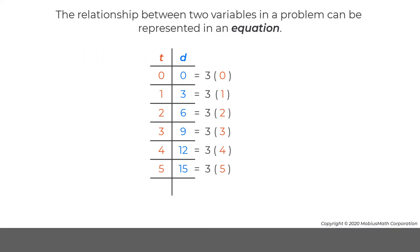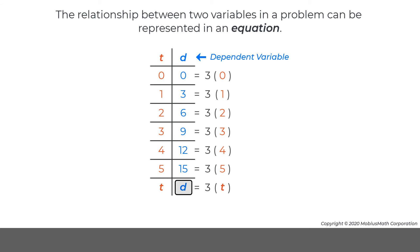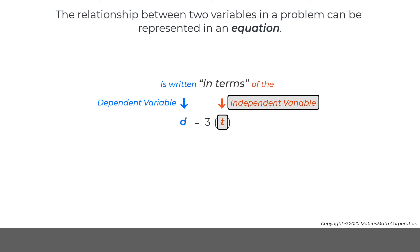The relationship between two variables in a problem can also be represented in an equation. To write an equation to represent the maximum speed of the remote-controlled car, the variable t can replace the value for the time in each equation. Since the left side of these equations is the distance the car travels, these values can be replaced with the variable d for distance. The dependent variable d is calculated by substituting the value for the independent variable t into the right side of the equation. Another way to say this is: the dependent variable in an equation is written in terms of the independent variable.